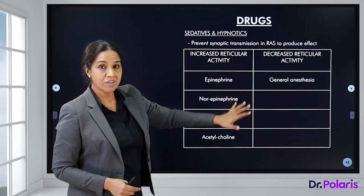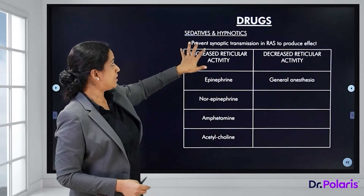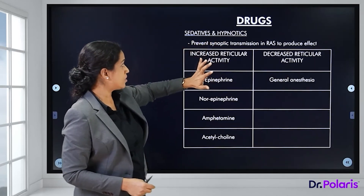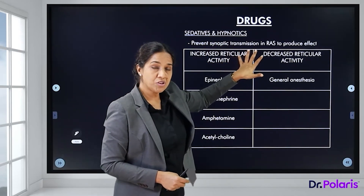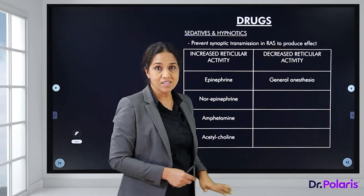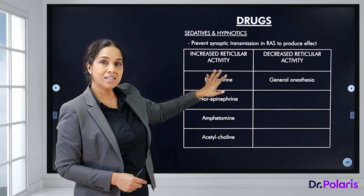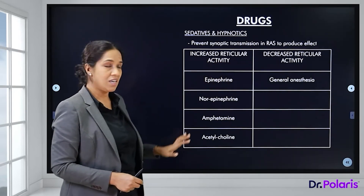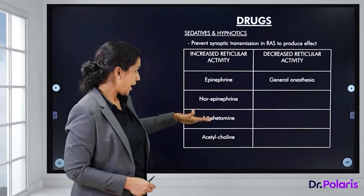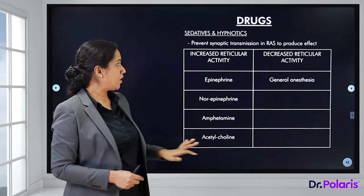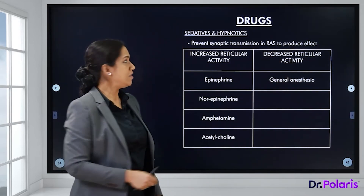Regarding the effect of drugs on the reticular formation: sedatives and hypnotics prevent synaptic transmission in the reticular activating system to produce their effects. Increased reticular activity occurs under the influence of epinephrine, norepinephrine, amphetamine, and acetylcholine, while decreased reticular activity occurs with general anesthesia.